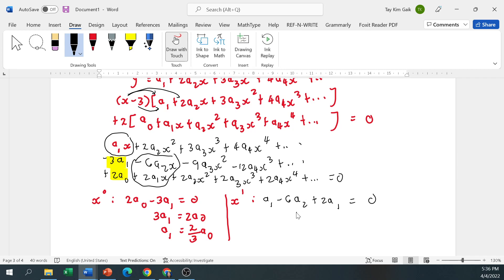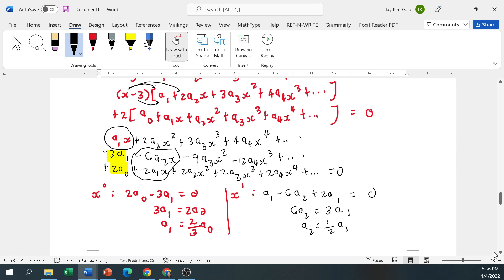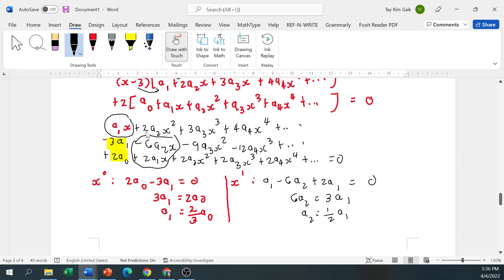So a1 minus 6a2 plus 2a1 equal 0. So you have 6a2 equal 3a1. a2 is half a1. Substitute a1 that you obtain.